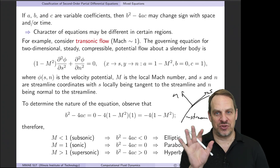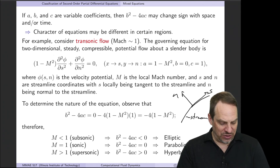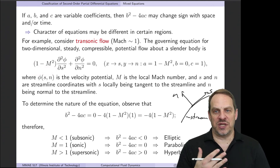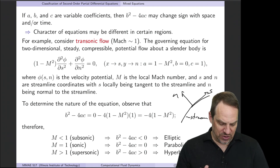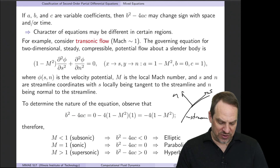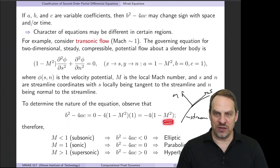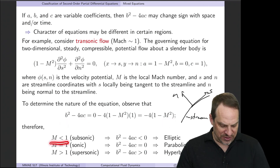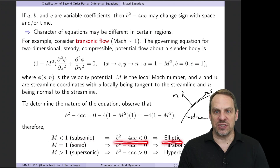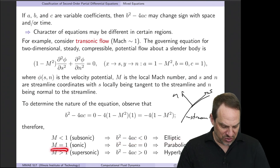This equation looks very similar to the Laplace equation but has the coefficient (1 − M²), where M is the Mach number—related to the speed of disturbances relative to the speed of sound. Looking at b²−4ac = −4(1 − M²): if M < 1 (subsonic), b²−4ac is negative, giving an elliptic equation.